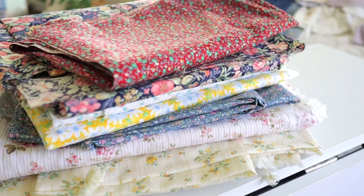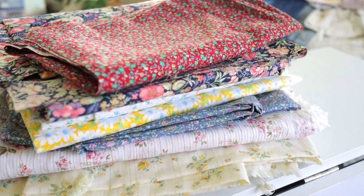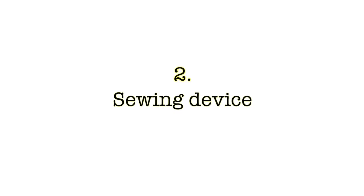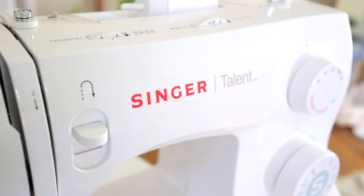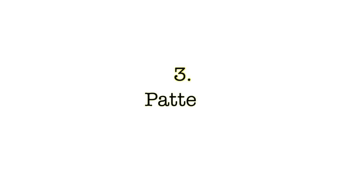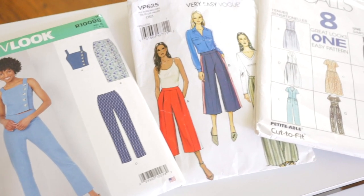There are three things that you need to sew. Number one: the fabric — the material that you're going to be working with. Number two: the device with which you're sewing — this might be a sewing machine or your hands, but for this video we're focusing on the sewing machine. And number three: the pattern.